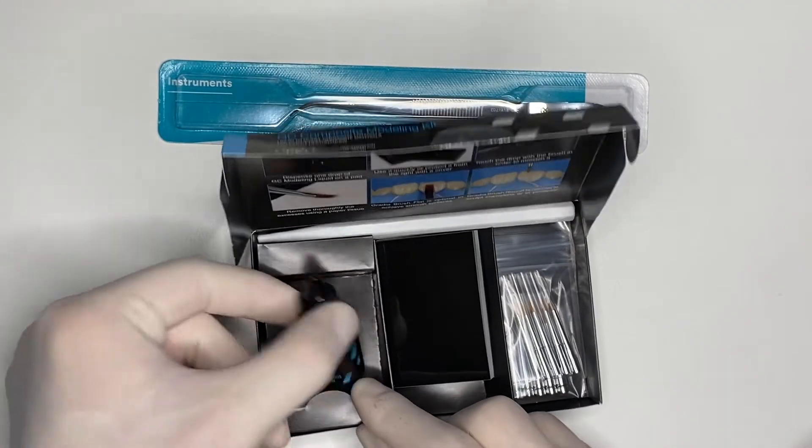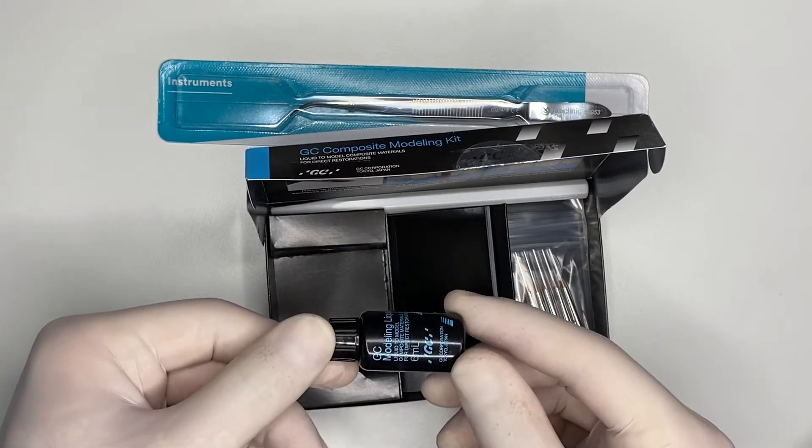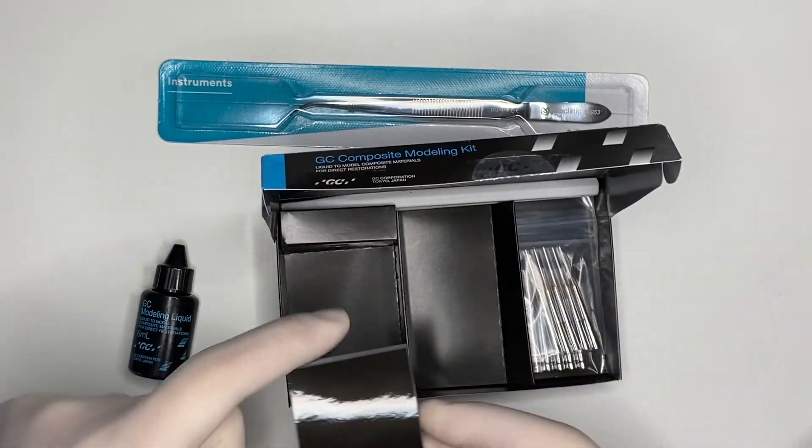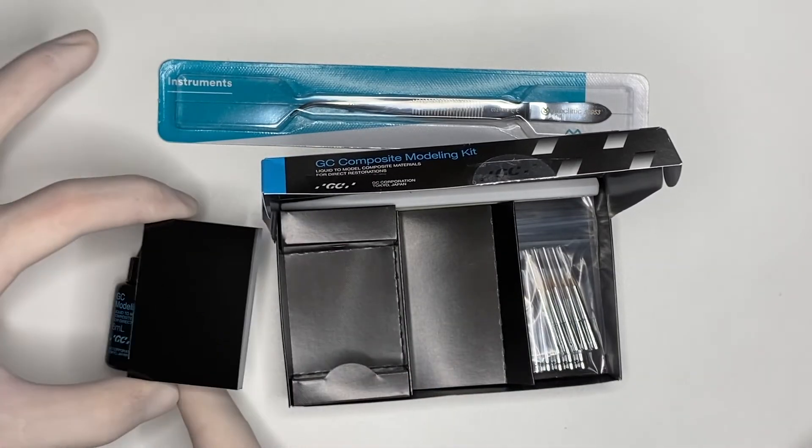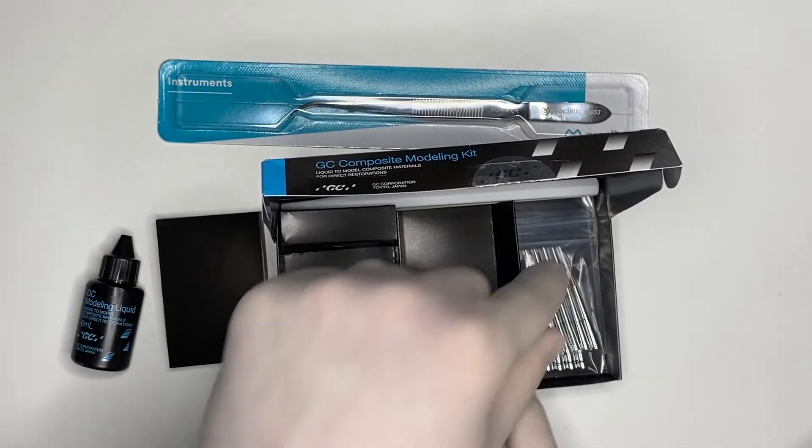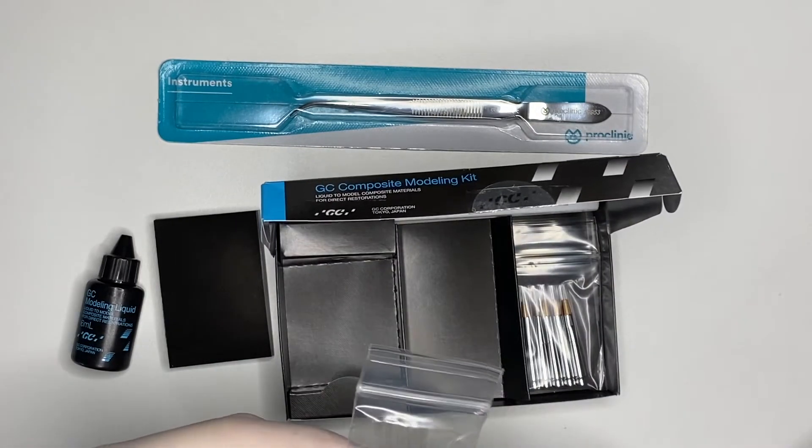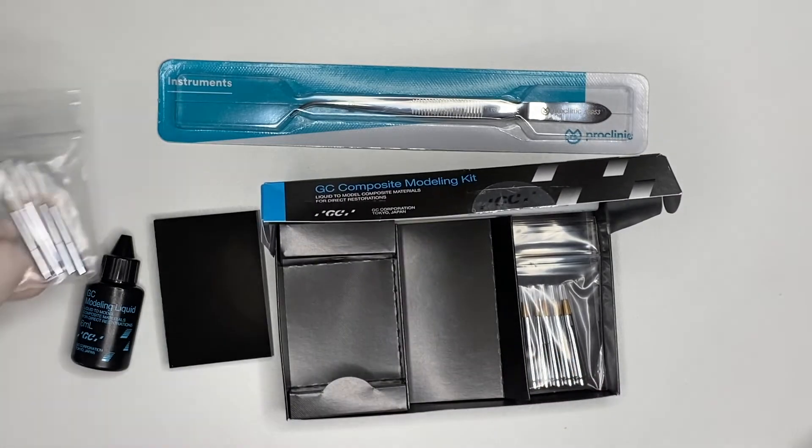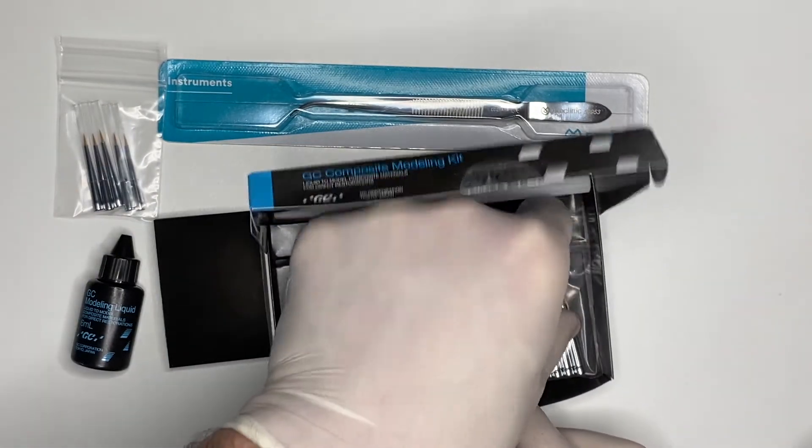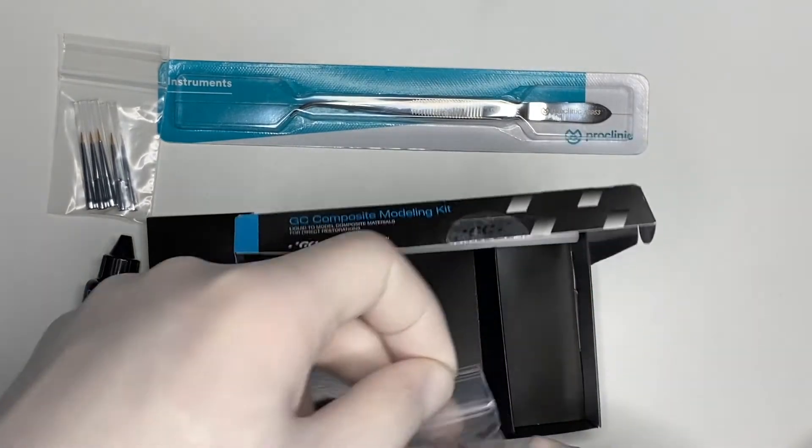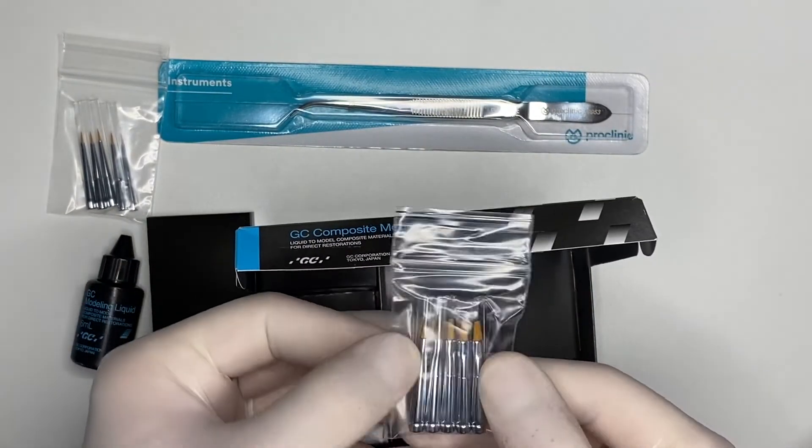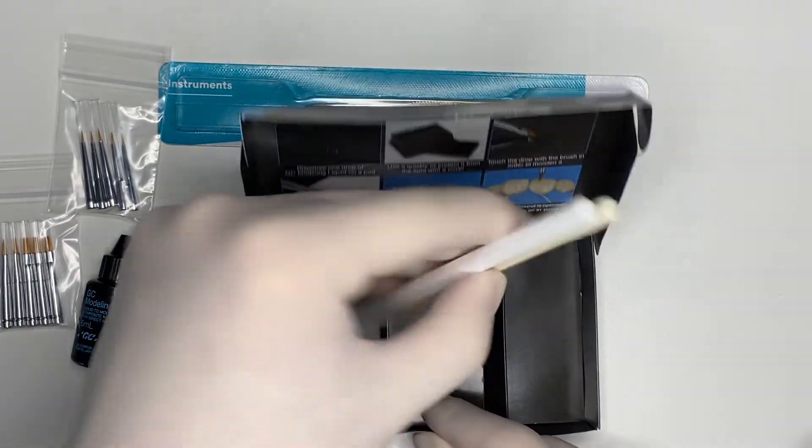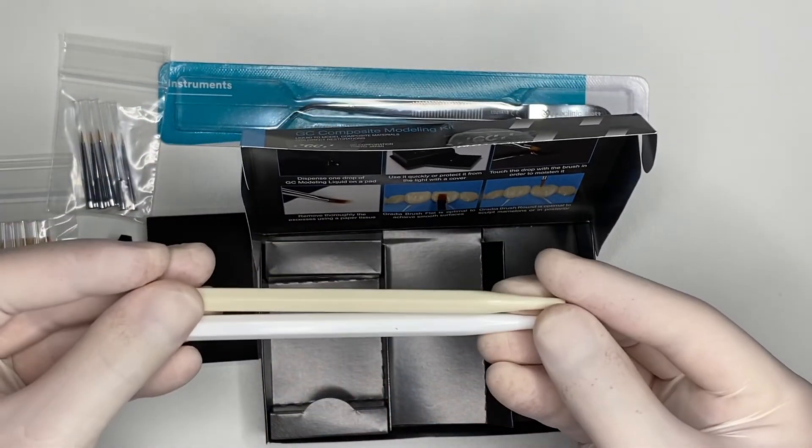First, the modeling liquid itself, a copious amount of pads, five round head brushes, and also five white brushes.